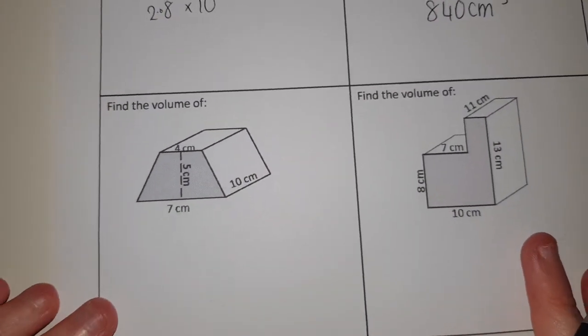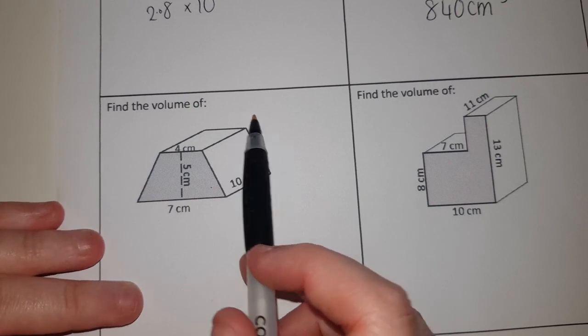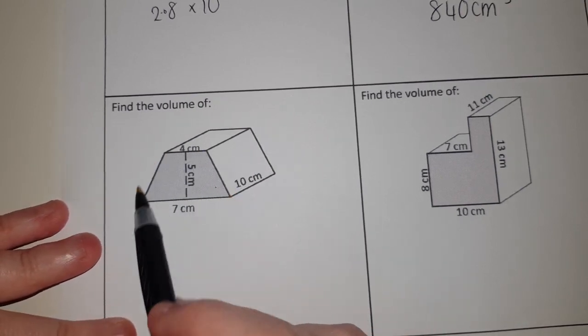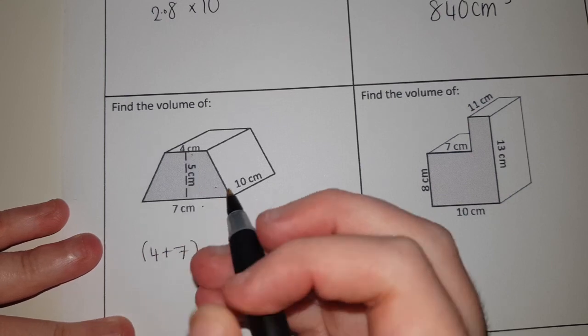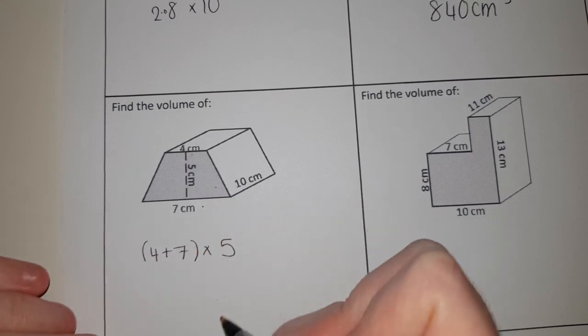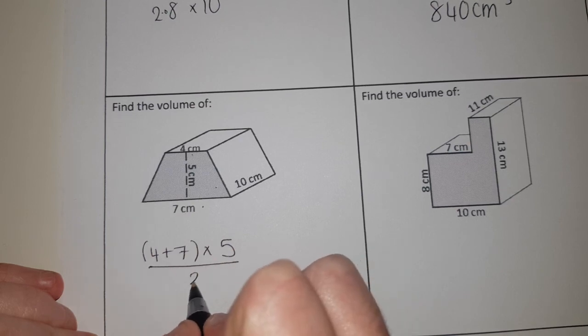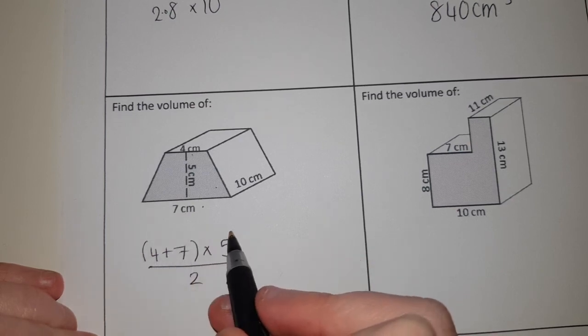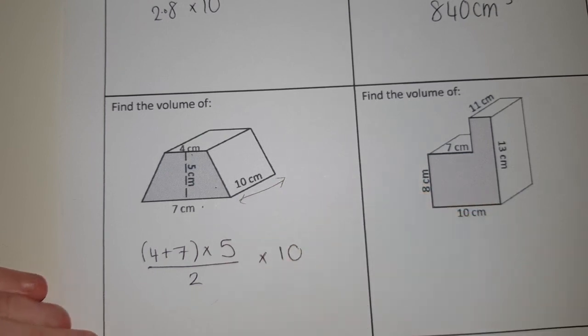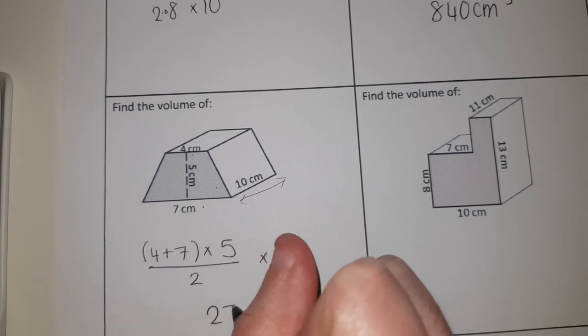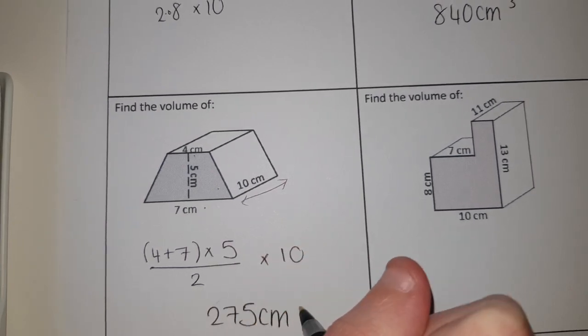On this one, you've got a trapezium that's been made into a 3D shape. So we're going to find the trapezium first. That is, add together the two parallel sides, so that's the 4 and 7, times by the distance between which is 5, and half it. That's going to give me the area of the grey trapezium. And then to turn that into a volume I times it by how deep the shape is, so I times the whole thing by 10. That gives me 275 centimetres cubed.